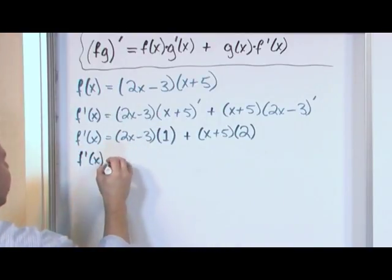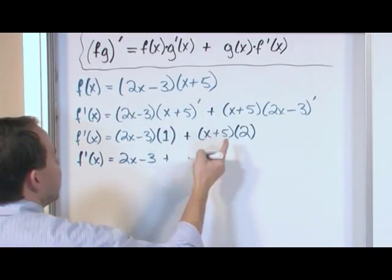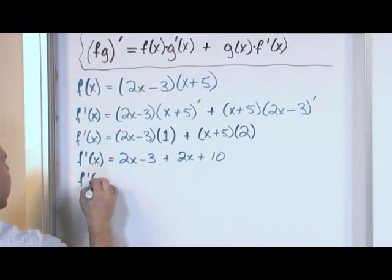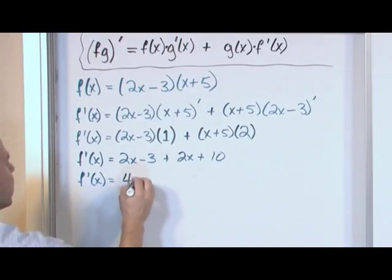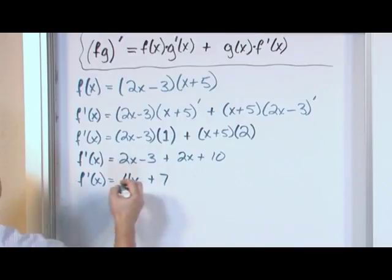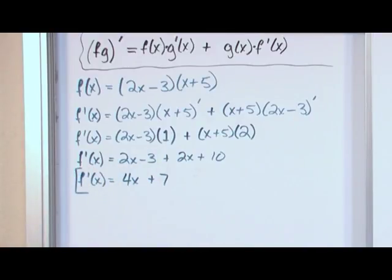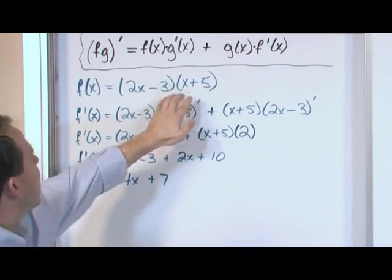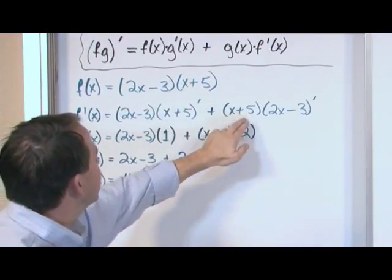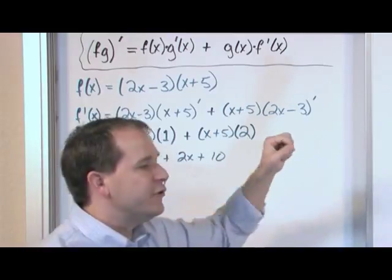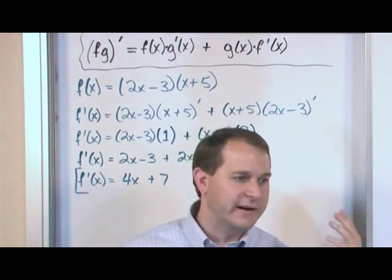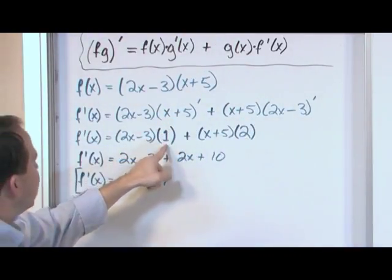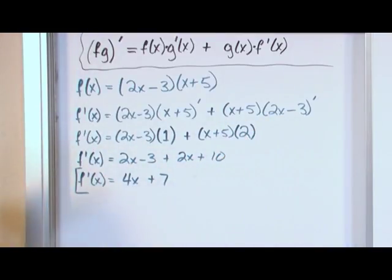Now we just do the multiplication. We get (2x − 3) times 1, which is just (2x − 3), plus (x + 5) times 2, which gives us (2x + 10). Then we simplify by combining like terms: 2x and 2x gives 4x, and −3 plus 10 gives 7. So the final answer is 4x + 7.